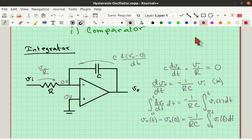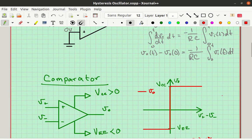If you go on down and solve this, you'll see Vout of T is the initial voltage on the capacitor plus minus one over RC times the integral of VN. So this is called an integrator circuit.